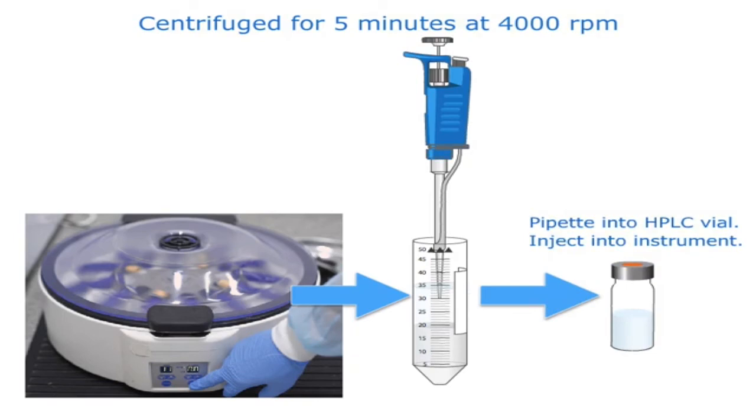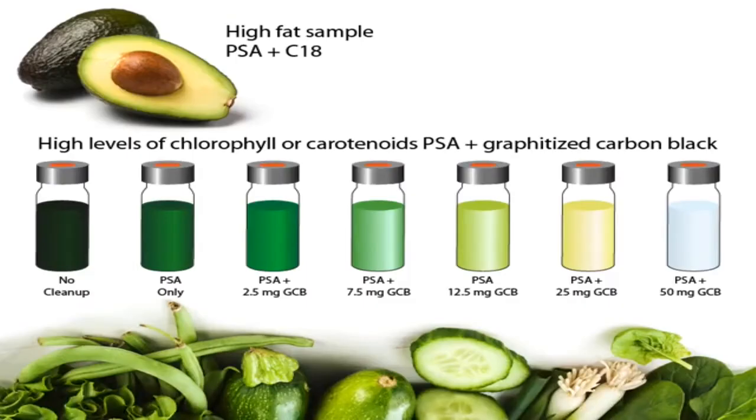The dispersive SPE sorbent is chosen to retain matrix components and not the analytes of interest. In some cases, mixed sorbents may be used. For samples with a high fat matrix, primary secondary amine mixed with C18 sorbent is recommended.